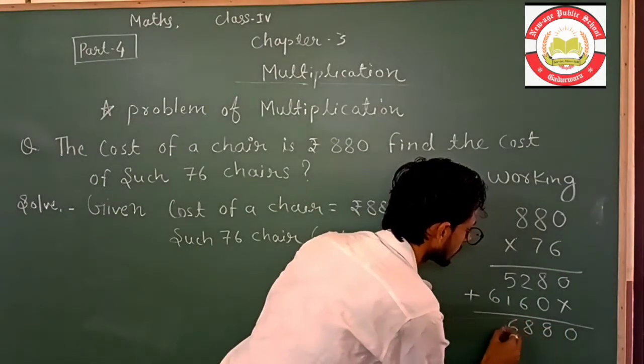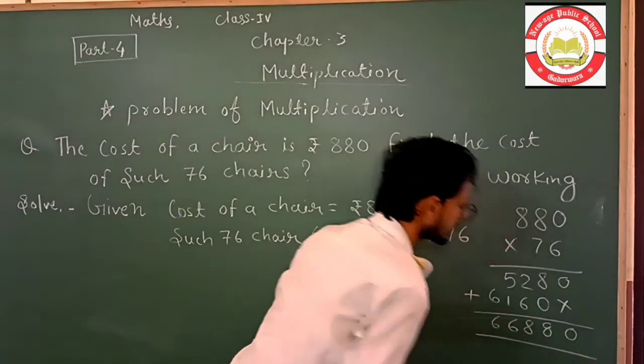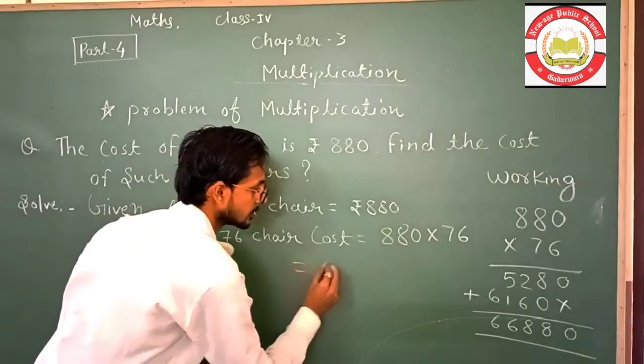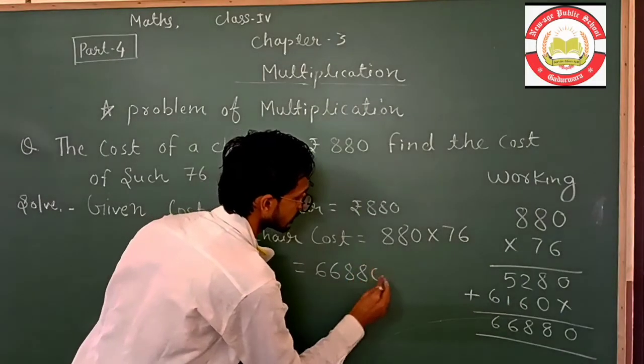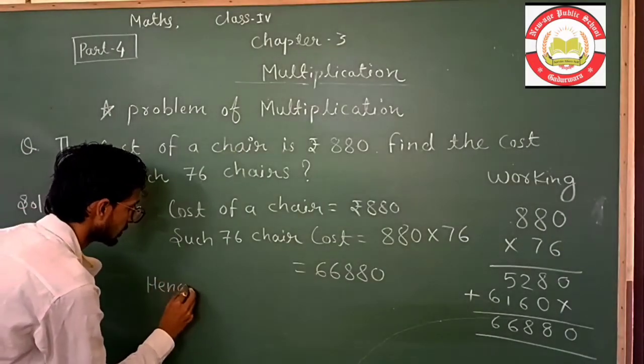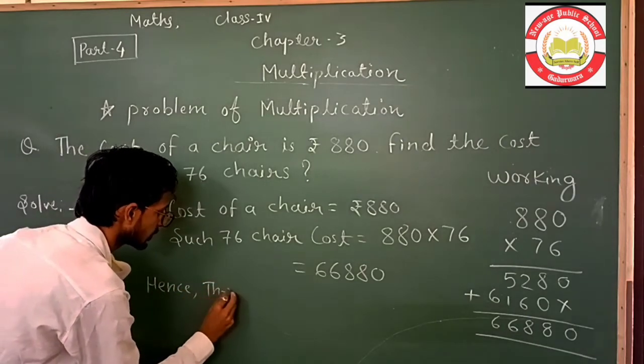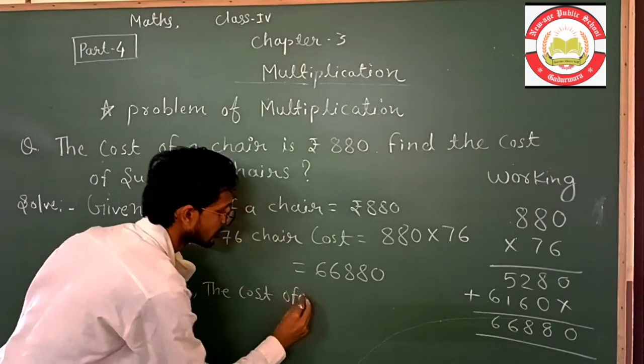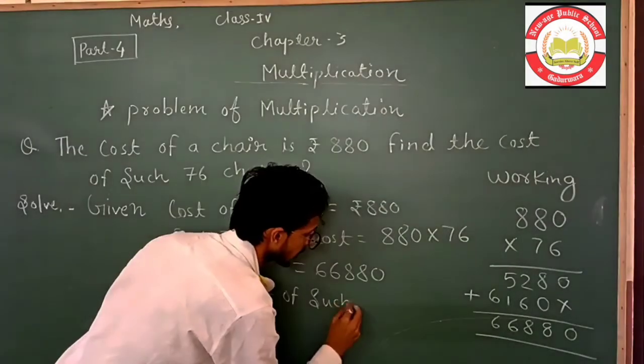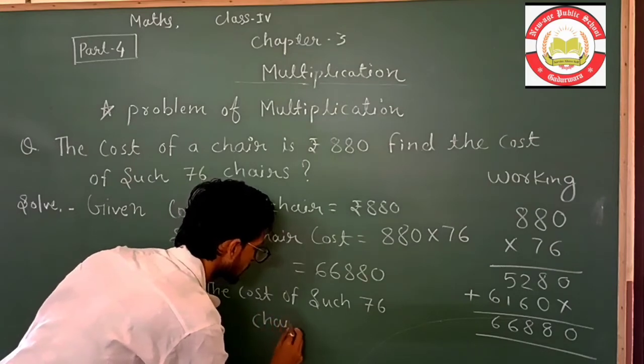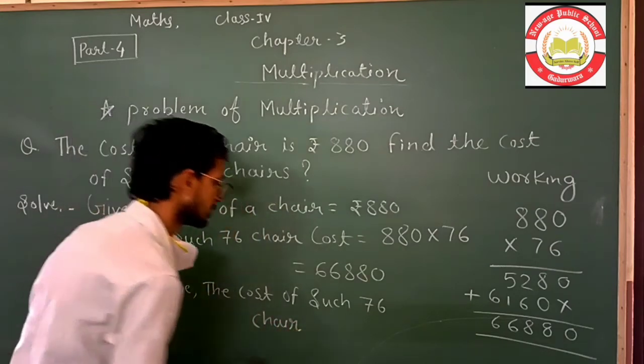Okay, so you will find the cost of this. So you will find the cost of 880, so you will find the cost of 76 chairs. And we will find the cost of it. Now working. Now working, so we will find the cost of 880.